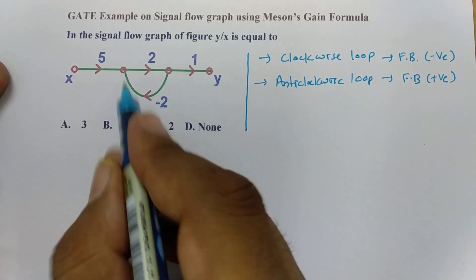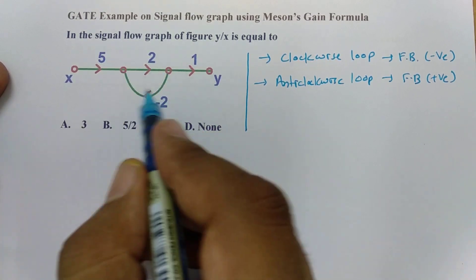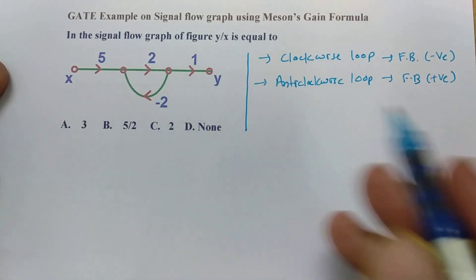So here one can see this is a clockwise loop. This is a clockwise loop, it means negative feedback.